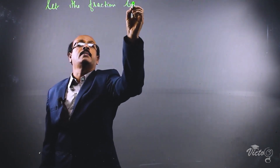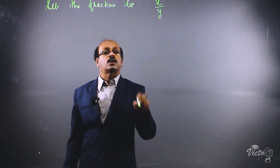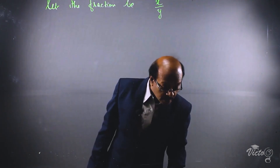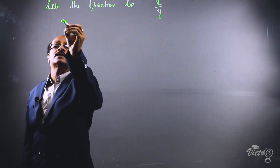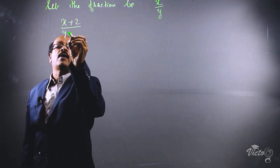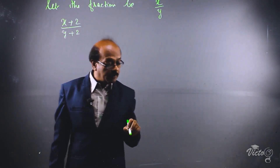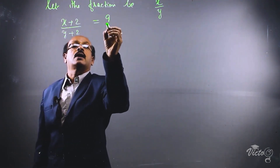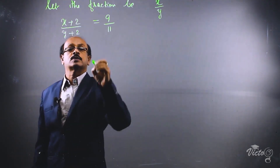Let the fraction be x divided by y, where x is the numerator and y is the denominator. If 2 is added to both the numerator and denominator, that is (x + 2) divided by (y + 2), then the value of the fraction becomes 9 by 11.